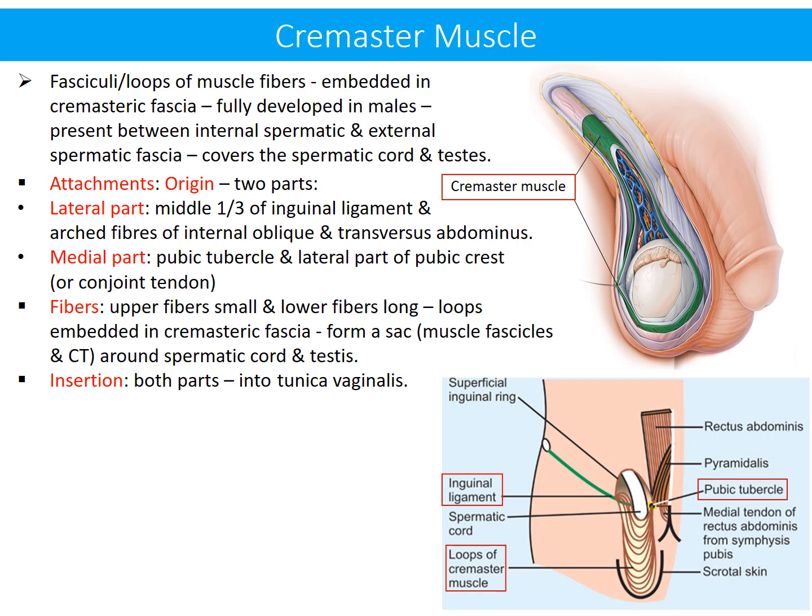Fibers descend downward. Upper fibers are small and lower fibers are long. They form loops which are embedded in cremasteric fascia, hence forming a sac consisting of muscle fasciculi and connective tissue, and this sac is present around the spermatic cord and testes. Fibers from both parts are inserted ultimately into the lower part of the tunica vaginalis.